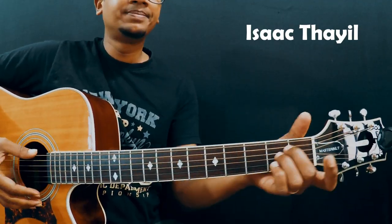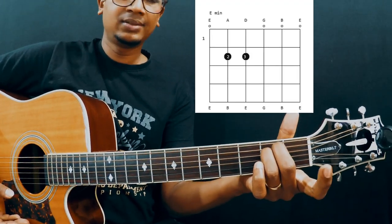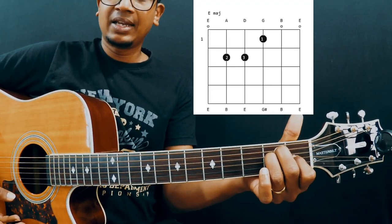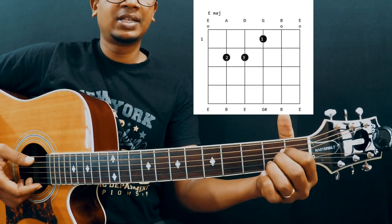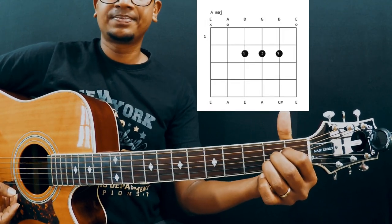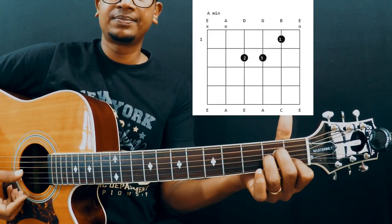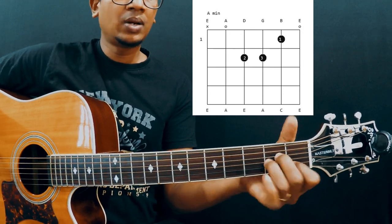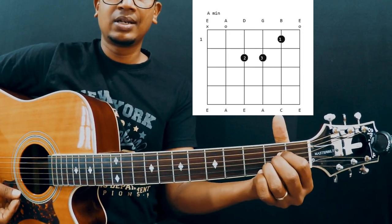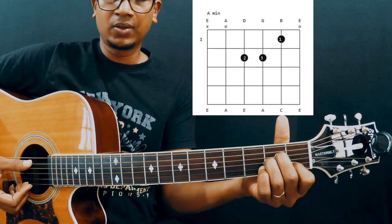Alright guys, so far we have learnt E minor, E major, then A major. Now we are going to learn A minor. So like A major, A minor is also a 5 string chord.